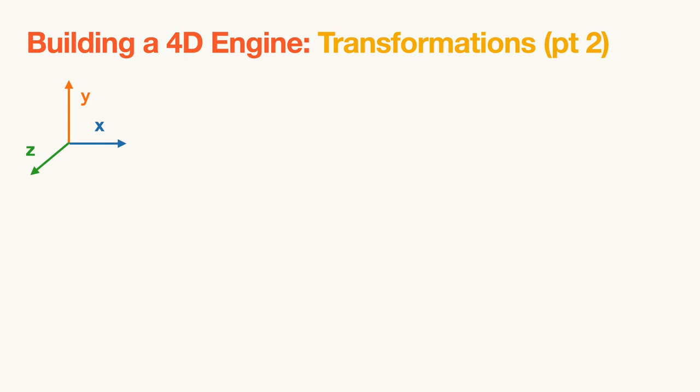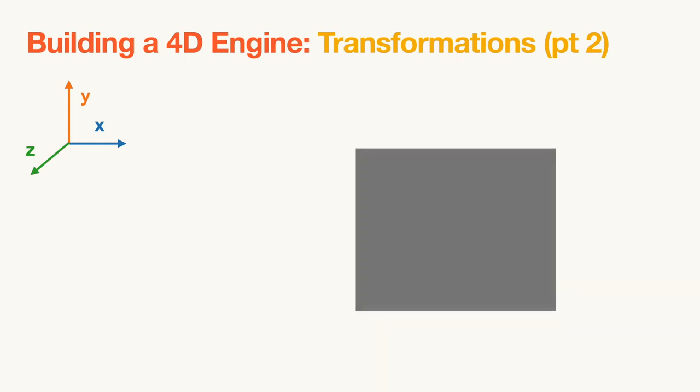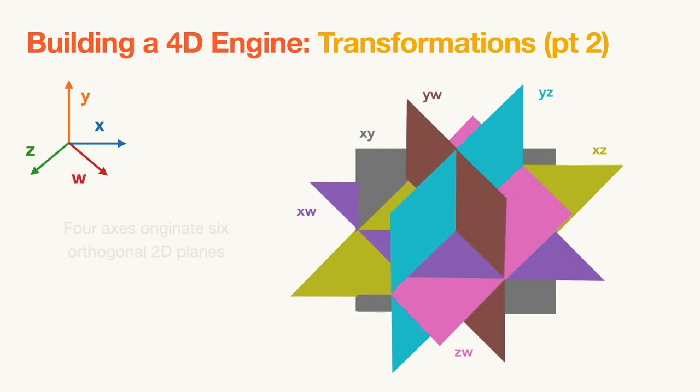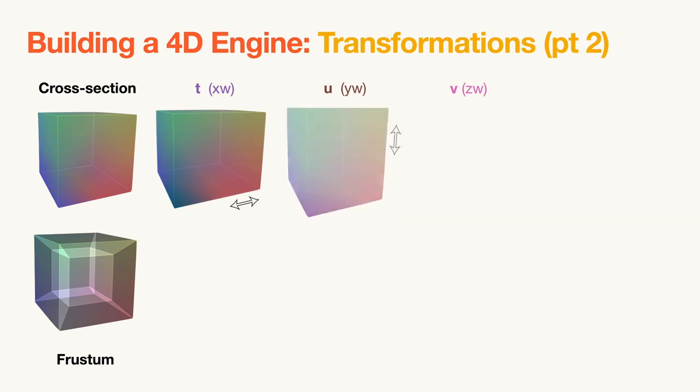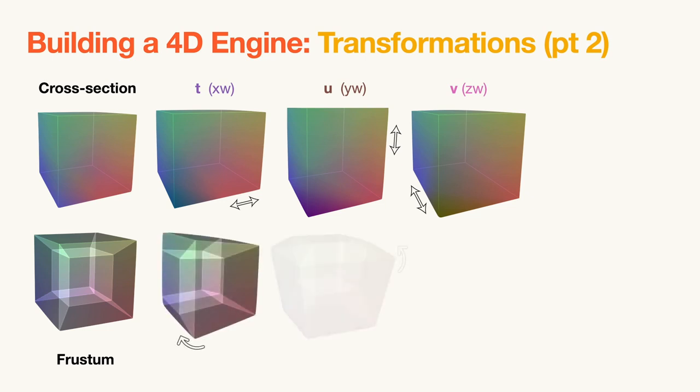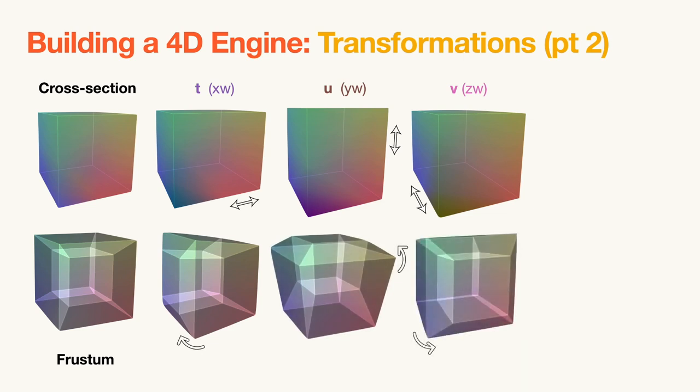Regarding rotations, we are used to think that the intersection of 3 axes generates 3 perpendicular planes. The reality in 4 dimensions is that 4 axes actually generate 6 orthogonal planes. In this sense, we define 3 additional rotational variables, T, U, and V, to define 4D rotations. In cross-section, a rotation around T, U, and V has the effect of stretching the mesh in one direction, whereas in Frustum Projection we have the effect of seeing the Tesseract's bounding cubes turn inside-out.